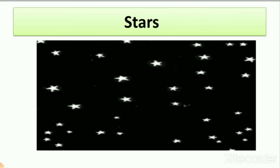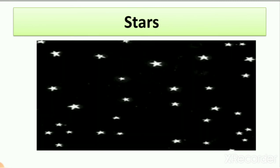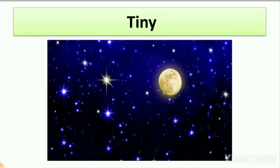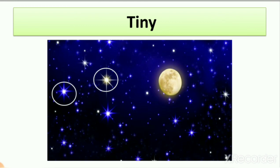Our next hard word is 'stars.' You all see stars in the night sky. Stars look tiny and they shine. When we learn about stars, we learn that stars are actually very big, but because they are so far away from us, they look tiny. Here you can see the moon is looking big and the stars are looking small — tiny means very small.